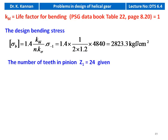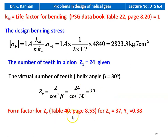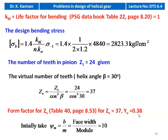Z1 = 24 is given. We calculate the virtual number of teeth for helix angle beta = 30 degrees: ZV = Z1 / cos³(beta) = 24 / cos³(30°) = 37. We take the form factor for ZV = 37: YV = 0.38. We take psi_m = B/m = 10 for our calculation.